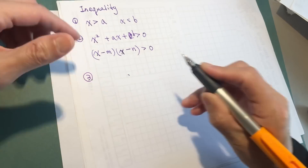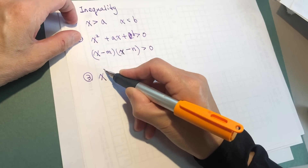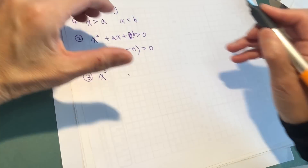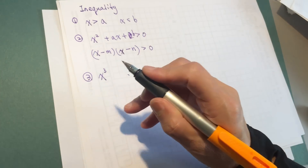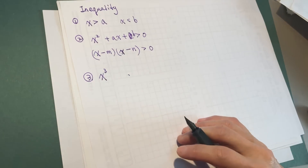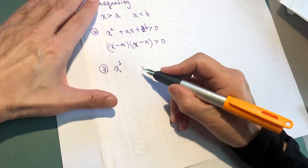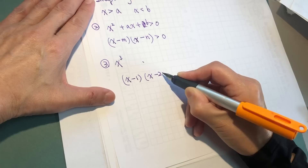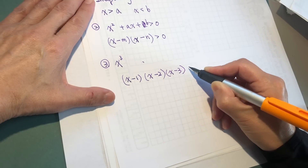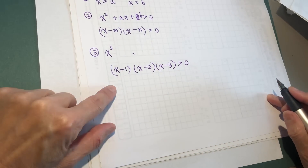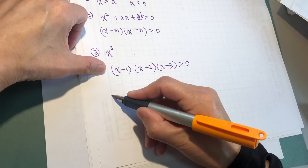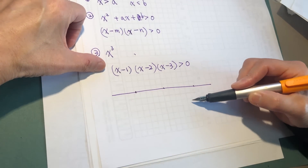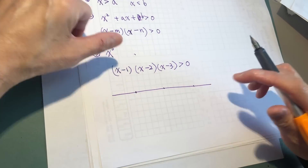Now we work on the third kind of problem: x to the power of 3, x cubed. It is the same idea — you put everything to the left side and the right side is 0. For example, the problem is (x minus 1)(x minus 2)(x minus 3) is greater than 0. That is a little bit complicated. We can see there are 3 points where the graph intersects with the x-axis.